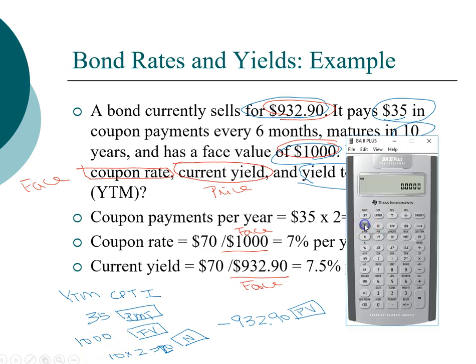First, let us clear our financial register. So clear TVM. We have $35 as our coupon payment, so that's PMT. $1,000 is our future value. 20 times, so 20 is our N. And then we need to enter this as an outflow.